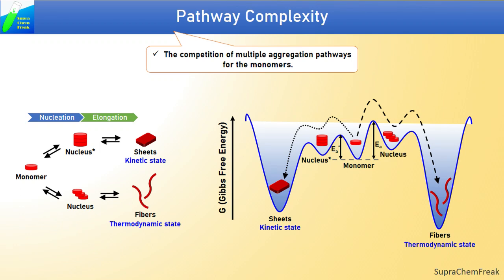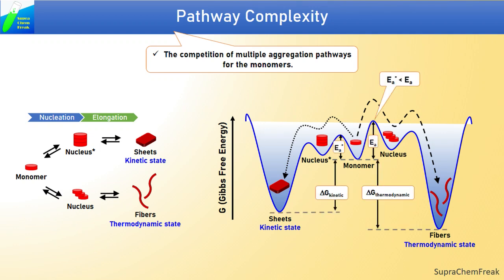These can result in formation of more than one morphology or organization. Sometimes, kinetic states such as sheets, as shown here, can form in the initial aggregation stages due to their low-energy barrier of formation and hence can have major effects on the subsequent self-assembly process of the thermodynamically most stable state, such as fiber in this case. Although the Gibbs free energy of formation for the thermodynamic state is more negative than the kinetic state, still the energy barrier of various processes involved play a key role to determine the pathway of the supramolecular polymerization process.